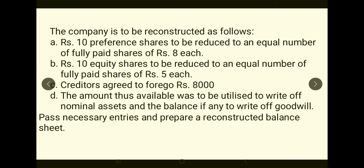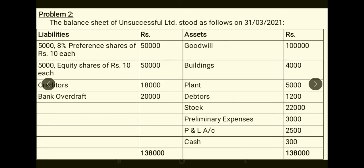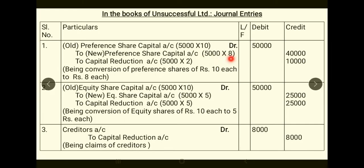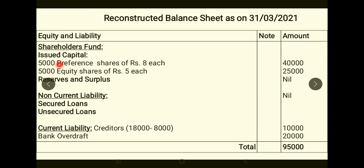Journal entries are now complete for Problem 2. We passed entries for: preference shares reduced, equity shares reduced, creditors foregoing, and utilizing the capital reduction amount to write off nominal assets and goodwill. Now we move on to the Reconstructed Balance Sheet. Always refer to the old balance sheet and the adjustments before constructing the new one.